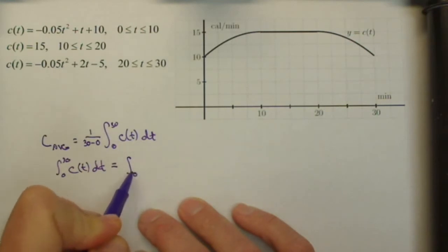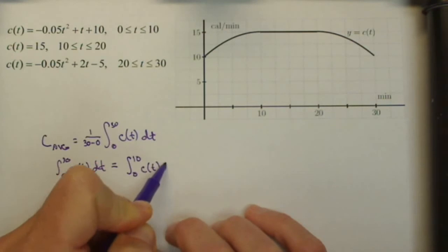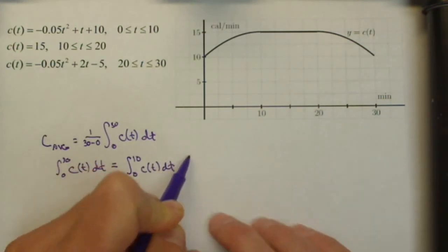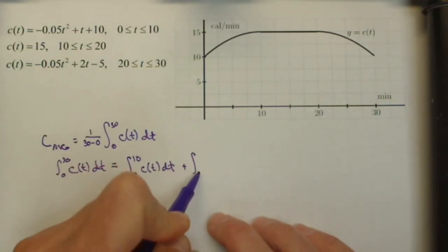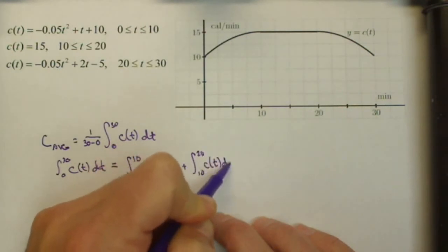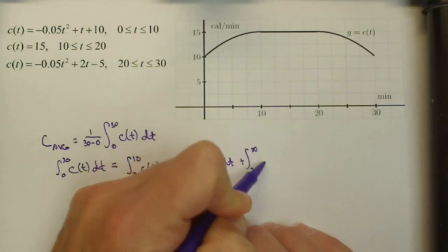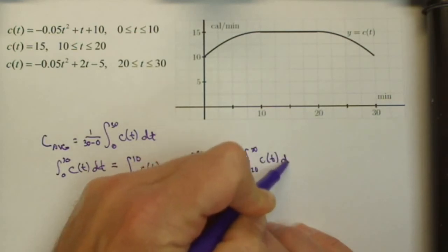So we're gonna have zero to 10, C of T, DT. We're gonna have a different calculation from 10 to 20 of C of T, DT. And finally, a different one on 20 to 30 of C of T, DT.